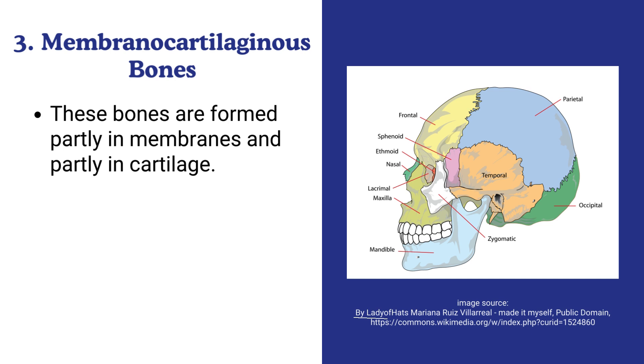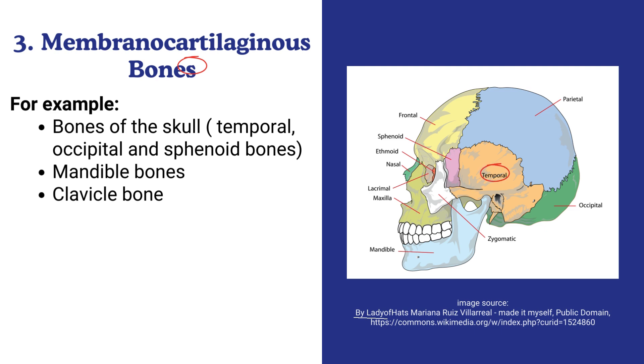Membranocartilaginous bones. These bones are formed partly in membranes and partly in cartilage. For example, bones of the skull - temporal, occipital and sphenoid bones, mandible bones, clavicle bone.